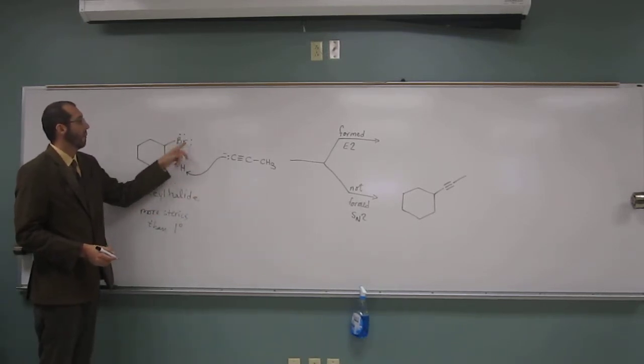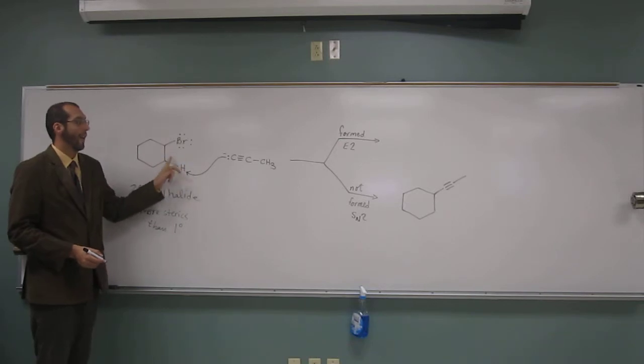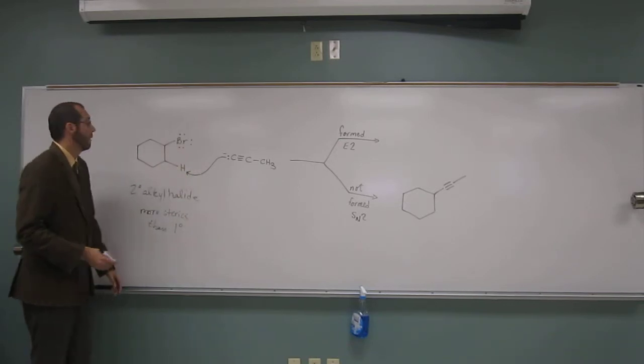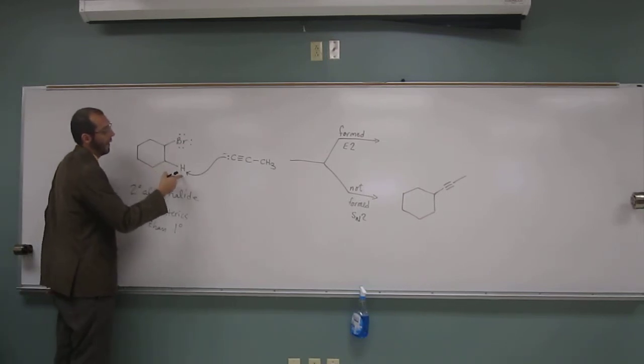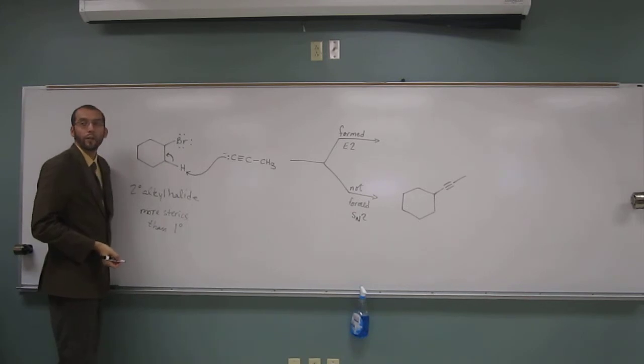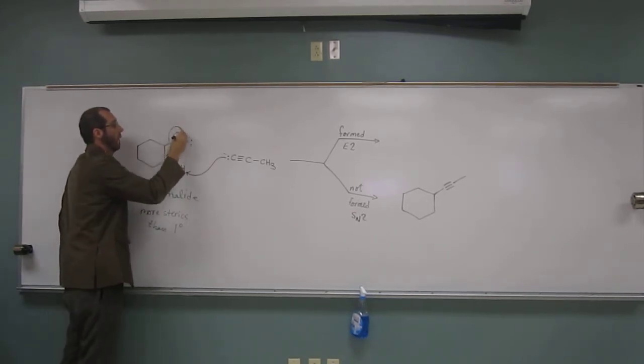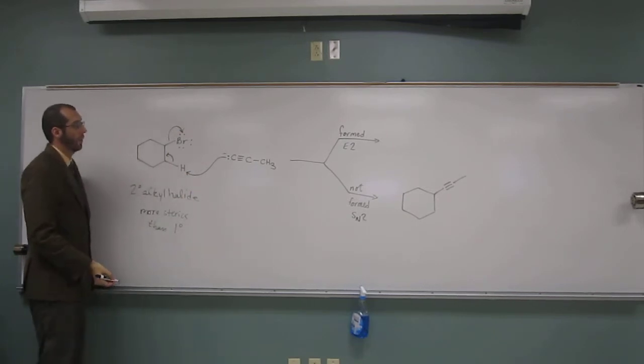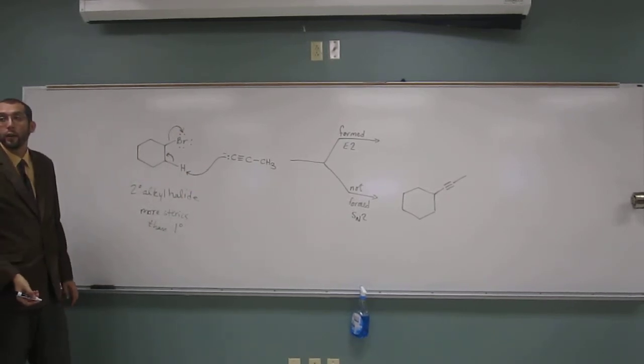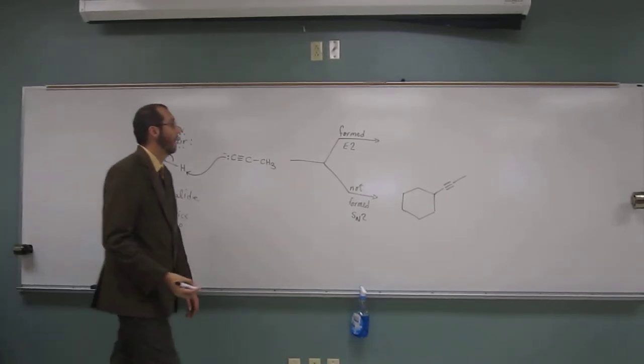So when we have that bromine there, that makes that hydrogen even more acidic. Okay. So what will happen is that hydrogen will be deprotonated. The electrons there will go into the ring and form a double bond. And those electrons there will bounce out and form the bromide anion.